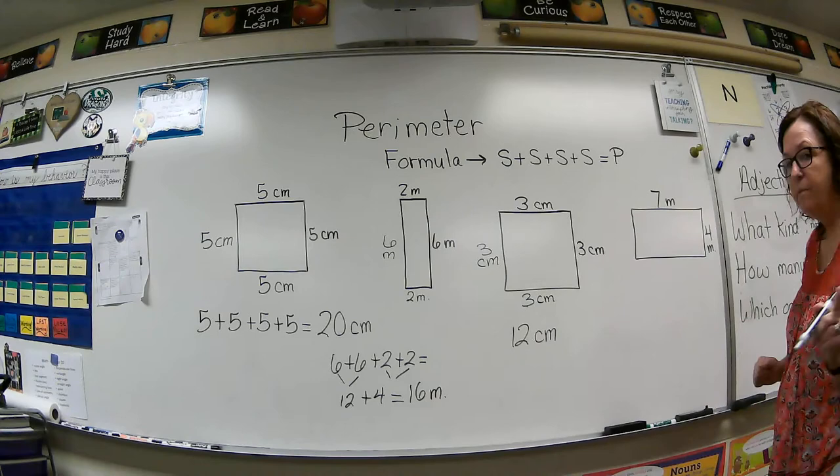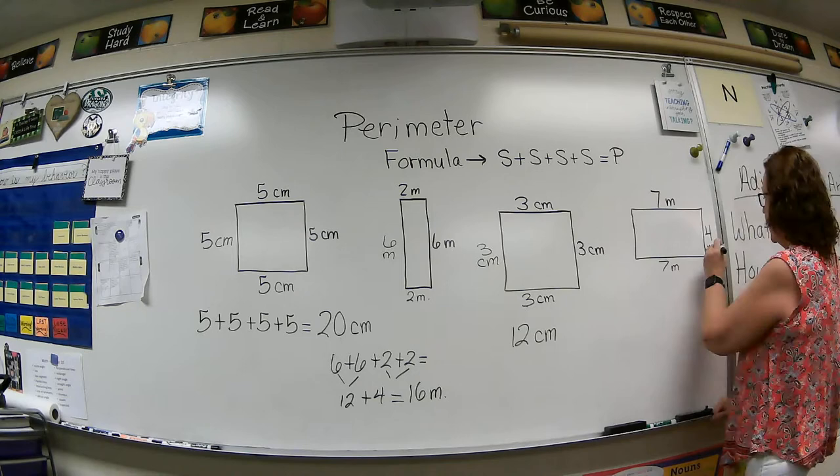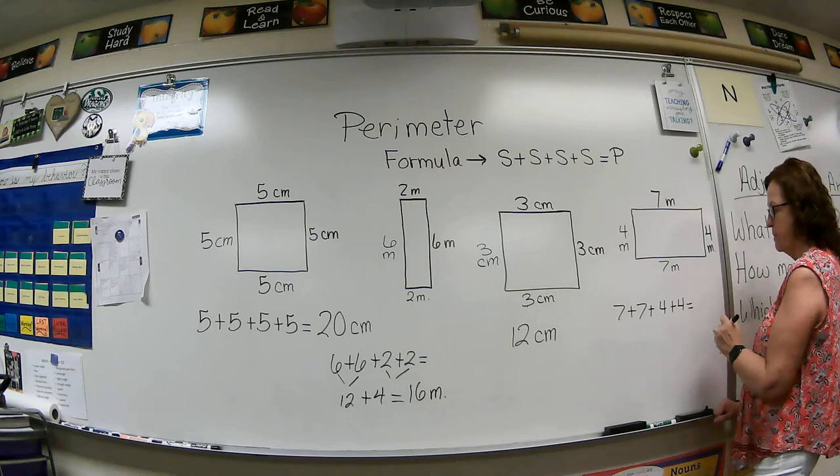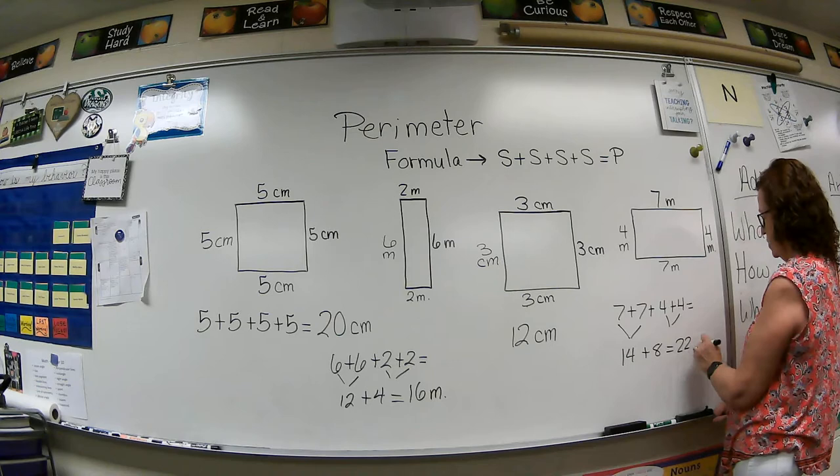One last example. Here's a rectangle with seven meters by four meters. Remember, opposite sides are the same length. So that means this is seven meters. And this over here is four meters. So we're going to add seven plus seven plus four plus four to get our perimeter. And seven and seven is fourteen. Four and four is eight. Fourteen plus eight is twenty-two meters.